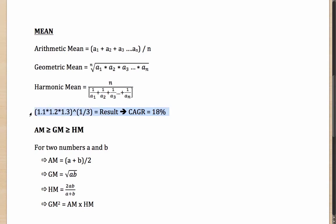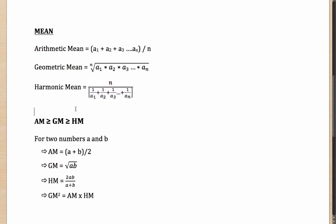Harmonic mean is simply N divided by (1/a1 + 1/a2 + 1/a3 till 1/an). This comes in handy for average speed. If you go from point A to point B at 40 km/h and return at 60 km/h, your average speed is not (40+60)/2 but is the harmonic mean of the two values. Harmonic mean applies when distance is constant and speeds are varying: N divided by (1/S1 + 1/S2 till 1/Sn).